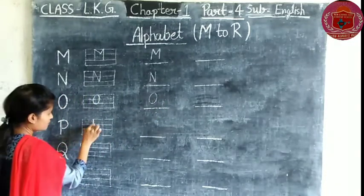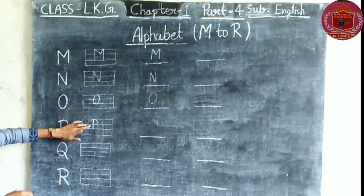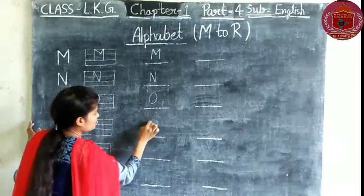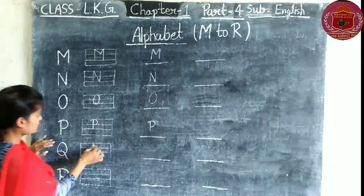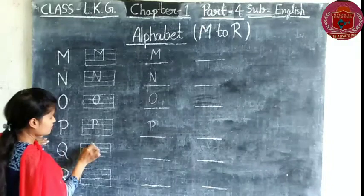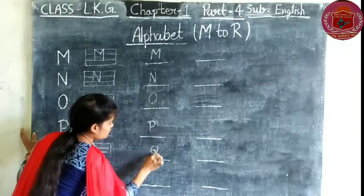Next, P. We also use upper two lines, one and two. P. Q. Q. And Q. We use upper two lines to write Q.